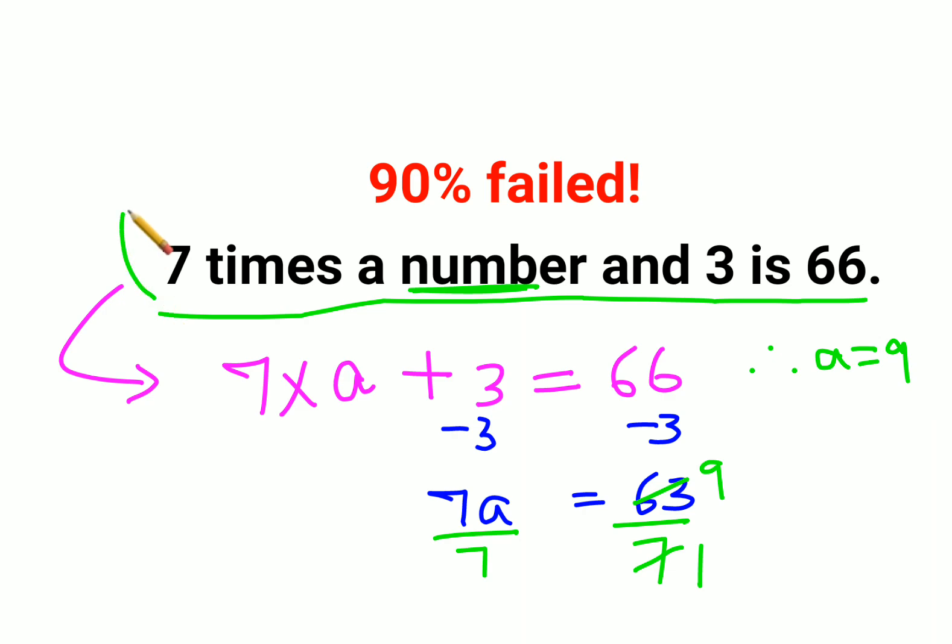Now let's verify this answer. 7 times 9—the number is 9—7 times 9 plus 3. Let's see: 7 times 9 is 63, plus 3 gets you 66, which is correct.